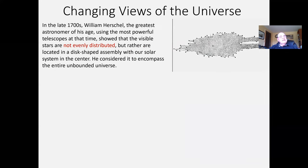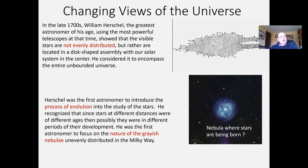Moving another hundred years to the late 1700s and the great William Herschel, the greatest astronomer of his time, building the largest telescopes of his day. He realized in surveying the sky that the stars were not evenly distributed, but seemed to be in a disc shape. He did consider that we in the solar system — the sun — was at the center of that disc-shaped universe. Interestingly, Herschel was the first astronomer to introduce the process of evolution into the study of stars, because his telescope could look so far back in time.